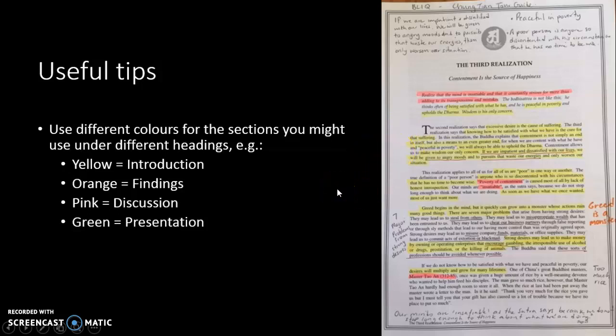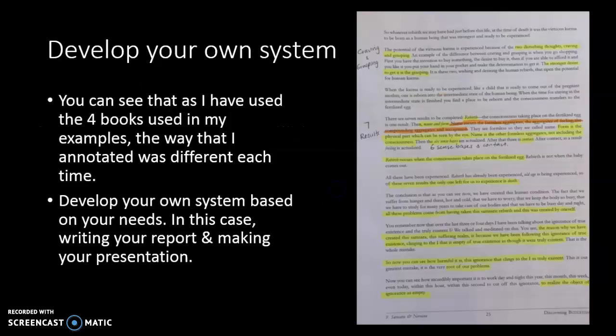These are all my annotation stuff from different courses I've been doing over the years. You can see I've used four different books in my examples, and each time it was different. I'm always tinkering at the edges and it will change a bit anyway depending on the needs. Obviously I'm studying this but not writing a report, so my main focus is just being able to remember it and find it again. But if you've got to organize it into a report, you might add another layer of color coding.